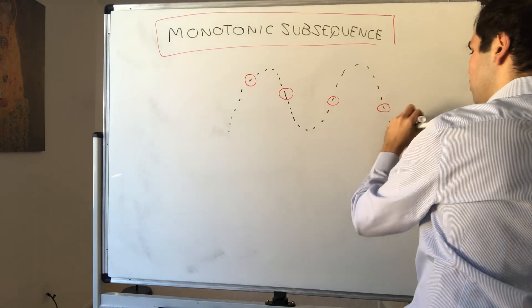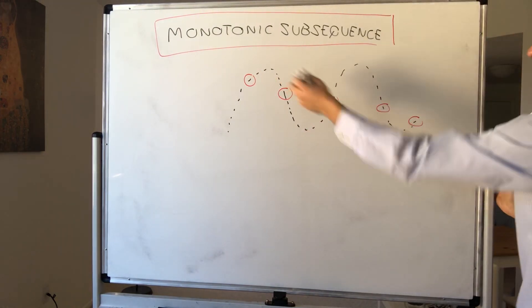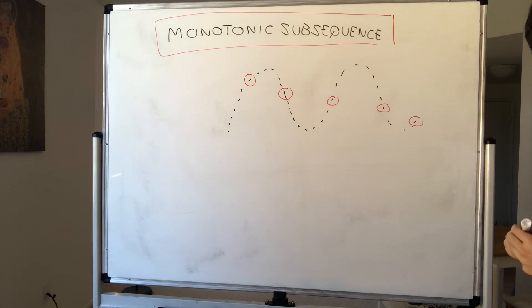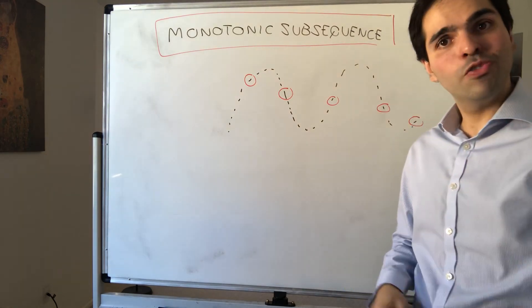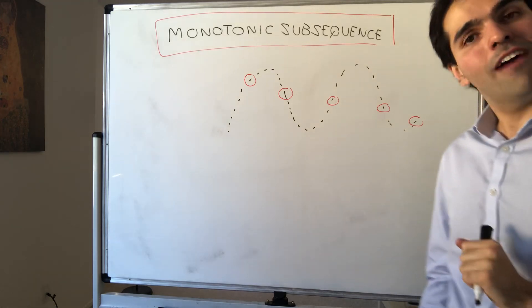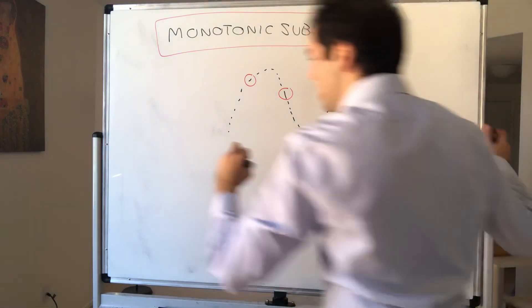Meaning it has a subsequence that's either non-increasing or non-decreasing. For instance, here with this weird sequence, there is a decreasing subsequence. And this is very cool and very useful, especially when we want to prove the Bolzano-Weierstrass theorem, which we'll do next time.